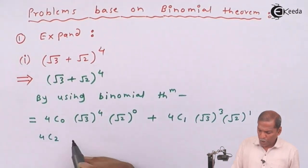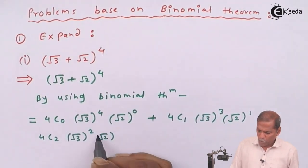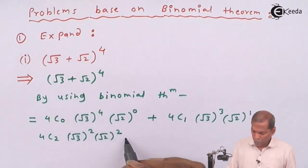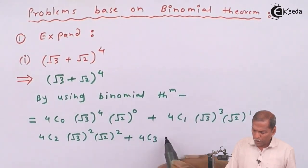Plus 4C2 root 3 bracket raised 2 into root 2 bracket raised 2.